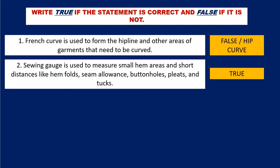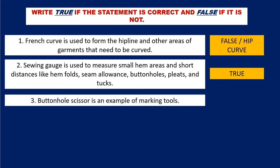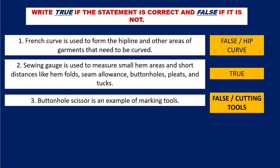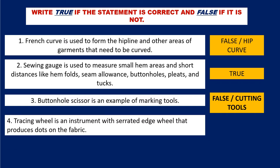Question number 3: Buttonhole scissor is an example of marking tools. The answer is false, because buttonhole scissor is not an example of marking tools but a cutting tool.